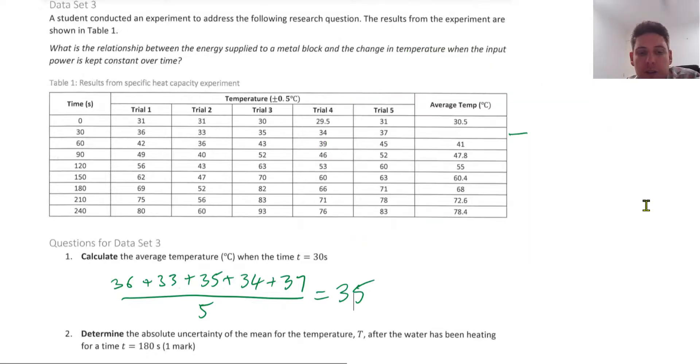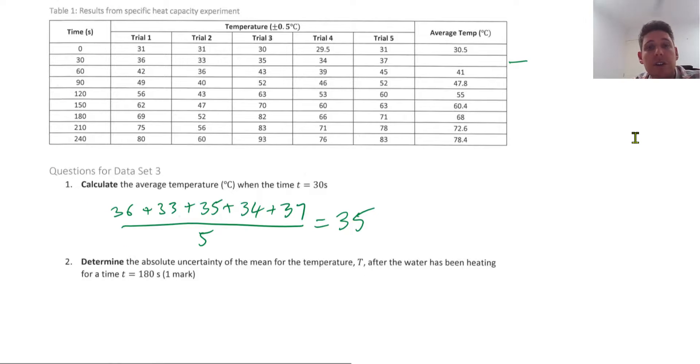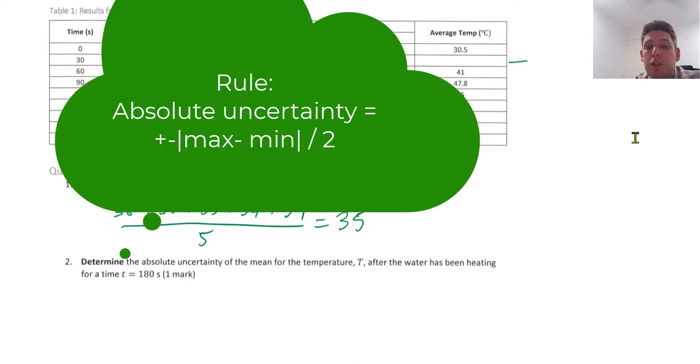35. Determine the absolute uncertainty of the mean for the temperature T after the water has been heated for a time T equals 180. So absolute uncertainty of the mean for temperature